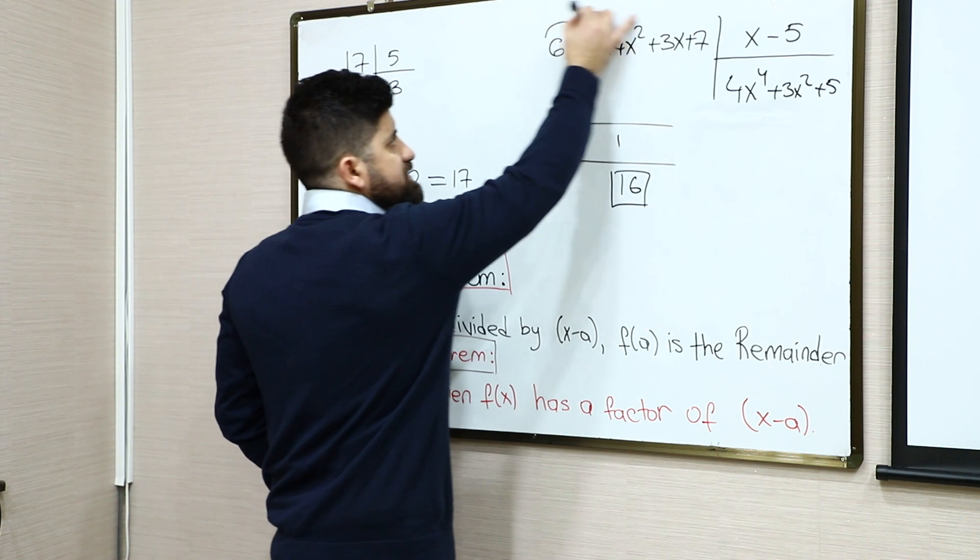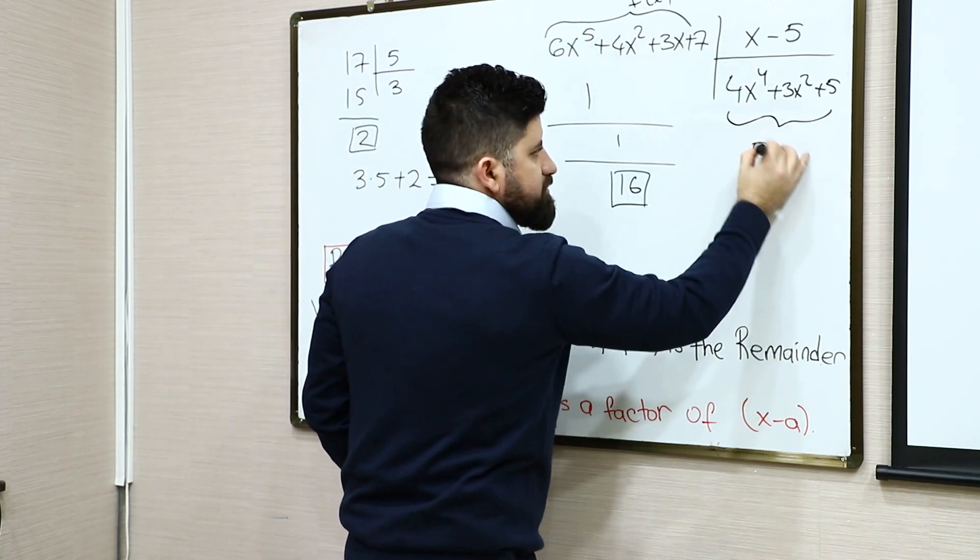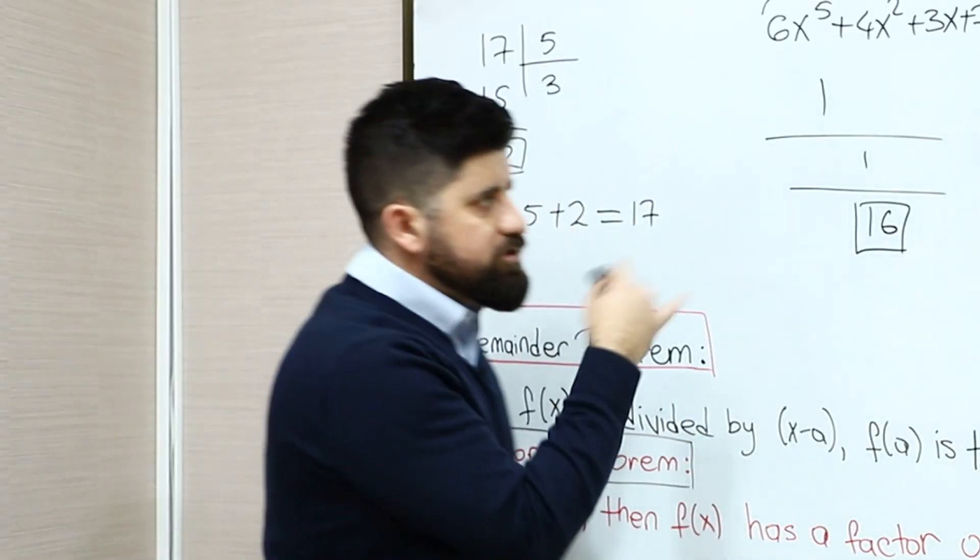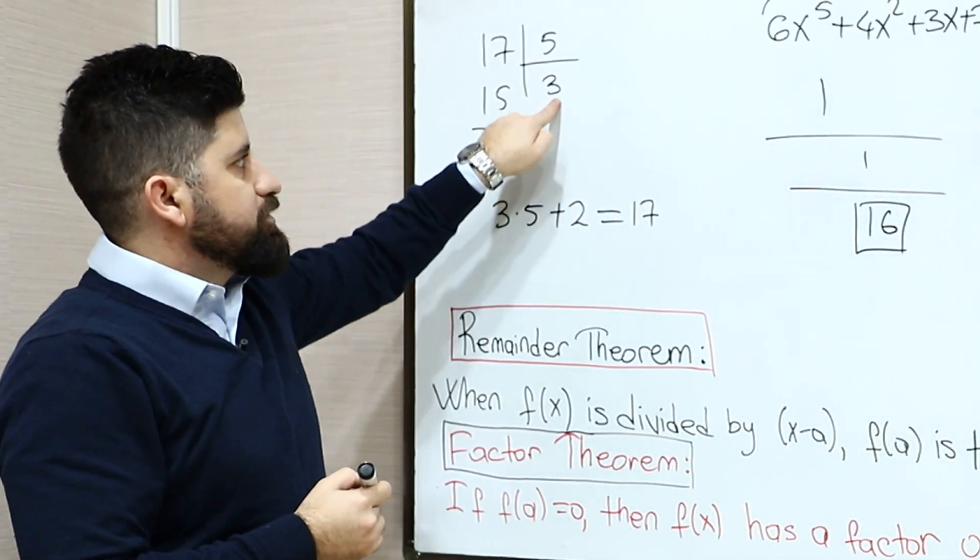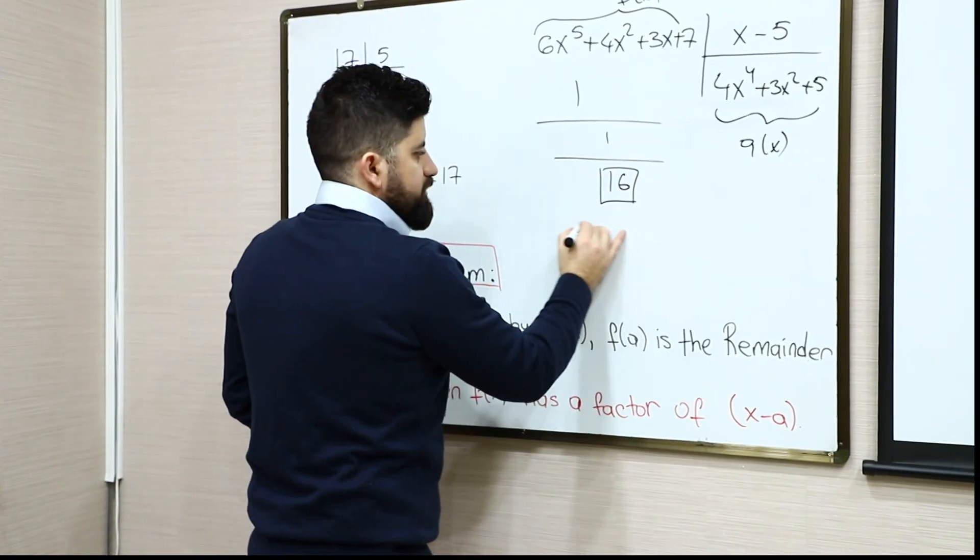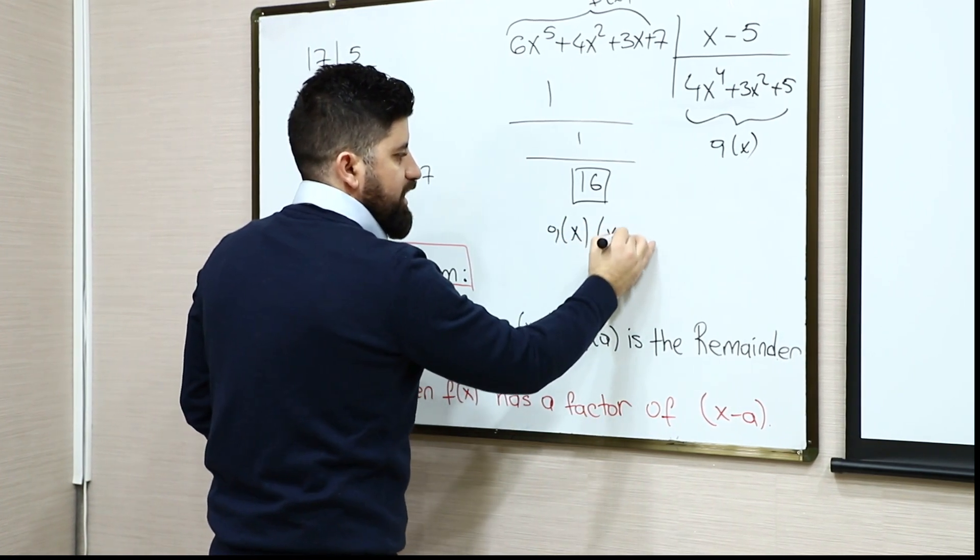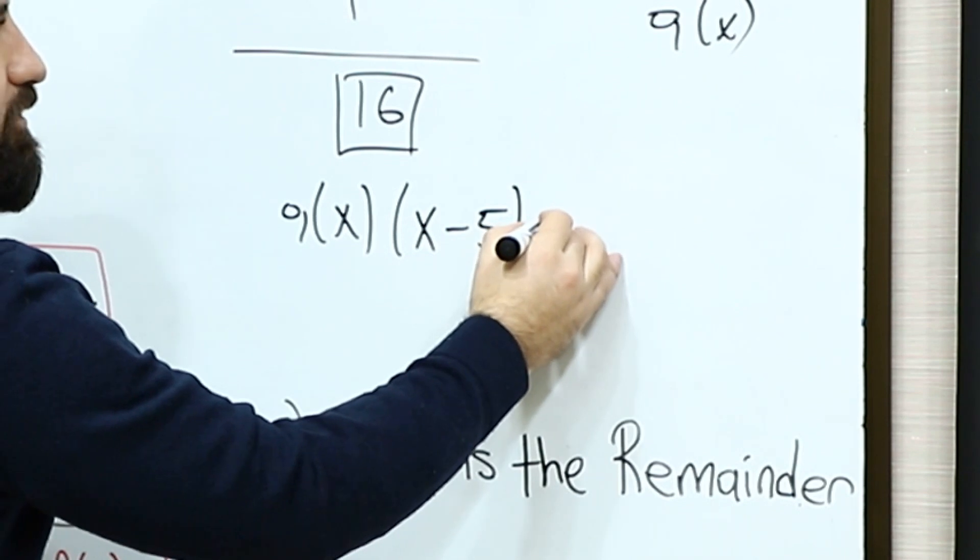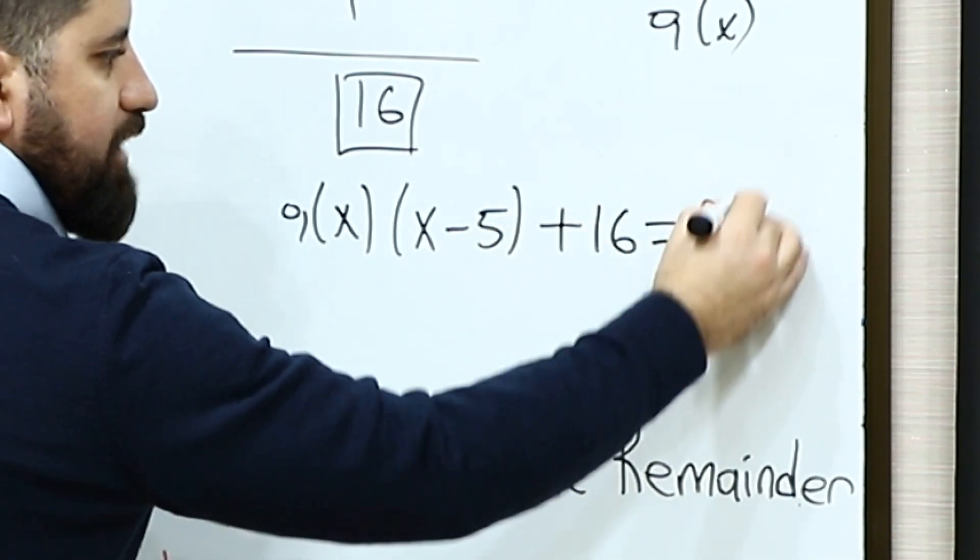So let's just express this as f(x) and this one is q(x). So when we just do inverse operation like multiplying the quotient to divisor and adding remainder, by multiplying the q(x), which is the quotient to x minus 5 and adding 16, we'll get what? We'll get the f(x).